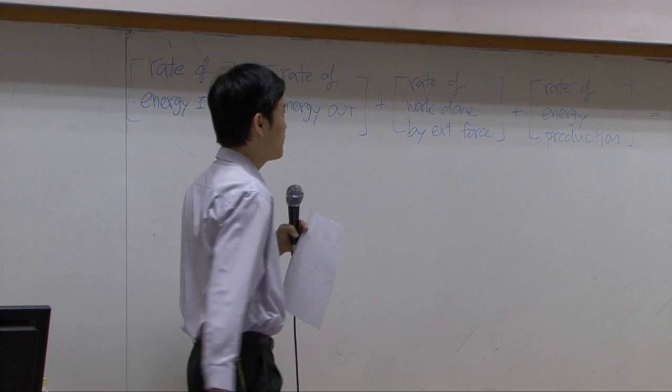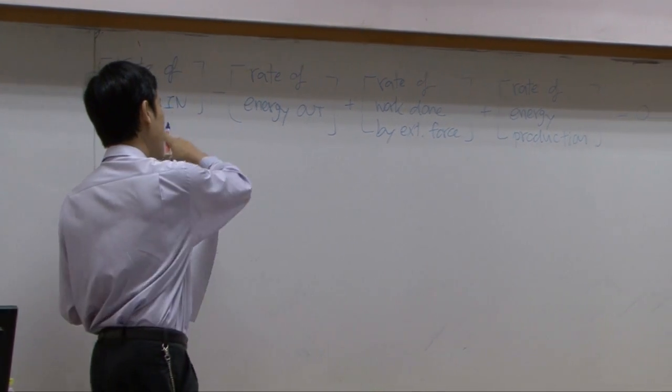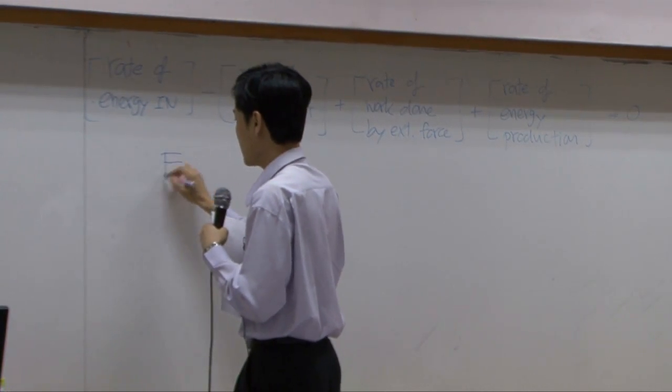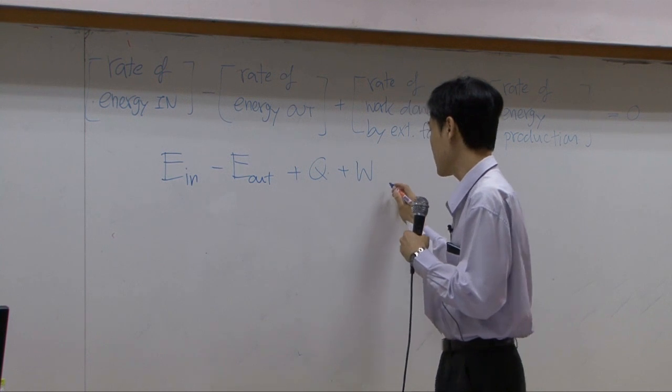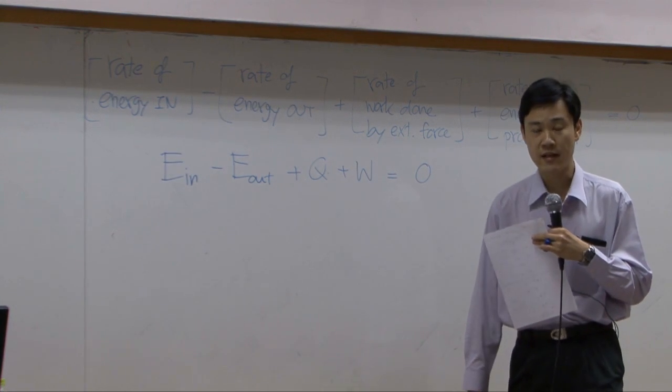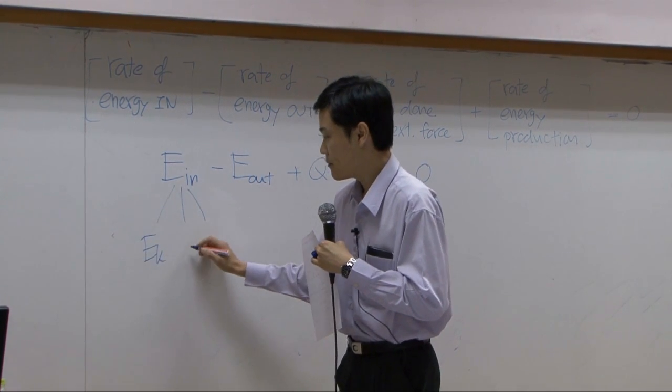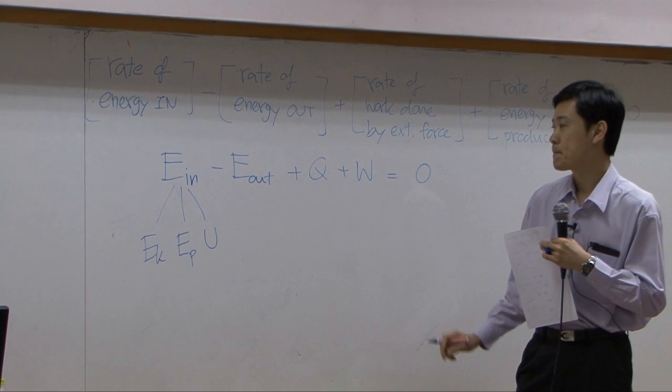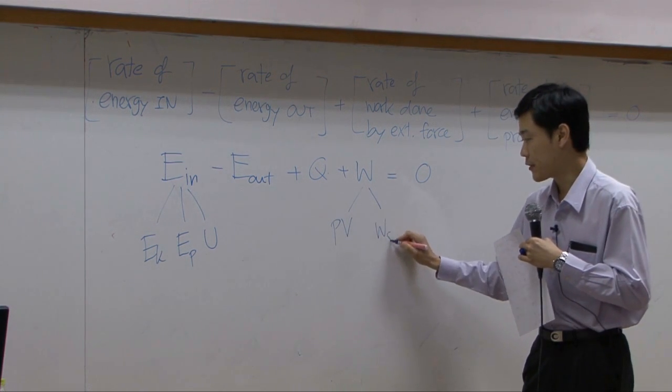Then we have additional term rate of work done by external force. Just like in thermodynamics, we can have in and out. Here would be energy. If you write that equation for first law from thermodynamics, you have energy in minus energy out plus Q plus work equal to accumulation or zero in this case at steady state. All right, in and out here would be kinetic energy, potential energy, internal energy. And then this work is divided into two parts: flow work and shaft work.